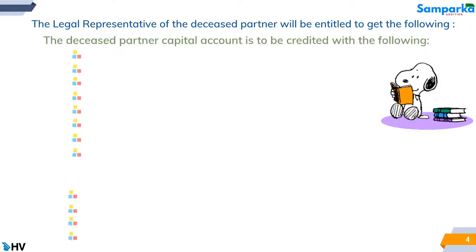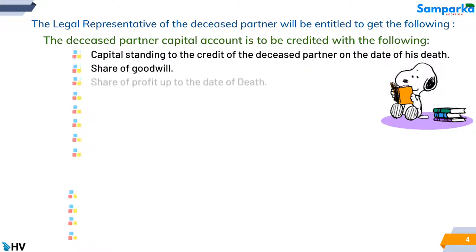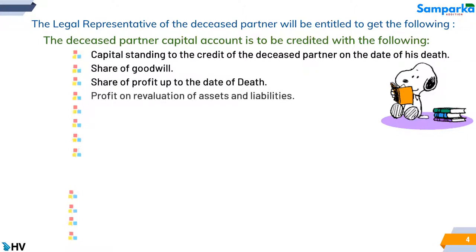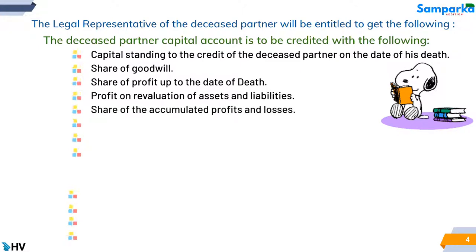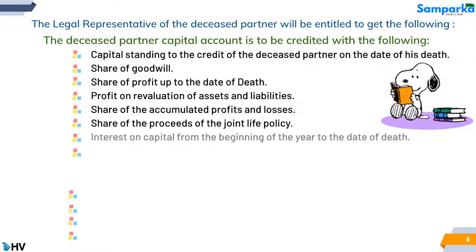The deceased partner's capital account is to be credited with the following: capital standing to the credit of the deceased partner on the date of his death; share of goodwill; share of profit up to the date of death; profit on revaluation of assets and liabilities; share of the accumulated profits and losses; share of the proceeds of the joint life policy; interest on capital from the beginning of the year to the date of death; and salary due.